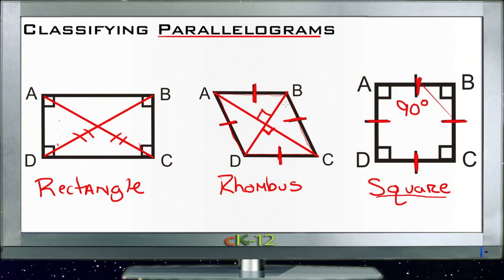And then finally you can prove that it happens to be a rhombus if when you draw your diagonals, those diagonals bisect the angles on the corners. So if this angle here and this angle here are the same, and if this angle here and this angle here are the same, then that's another way to prove that what you have is a rhombus.